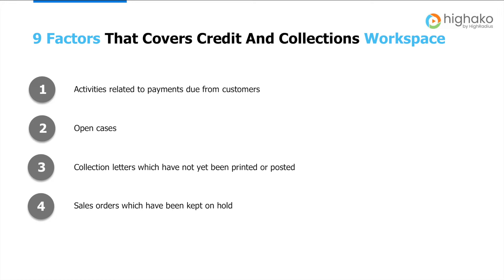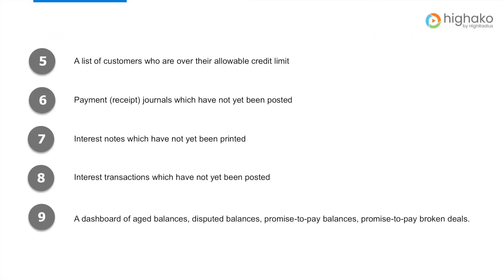It covers the following nine factors. First is activities related to payments due from customers. Second is open cases. Third is all the collection letters that have not yet been printed or posted. Fourth is sales orders which have been kept on hold. Fifth is a list of customers who are over their allowable credit limit. Sixth is payment or receipt journals that have not yet been posted. Seventh includes interest notes which have not yet been printed. Eighth includes interest transactions which have not yet been posted. And finally, the ninth point talks about a dashboard of aged balances, disputed balances, promise to pay balances, and promise to pay broken deals.